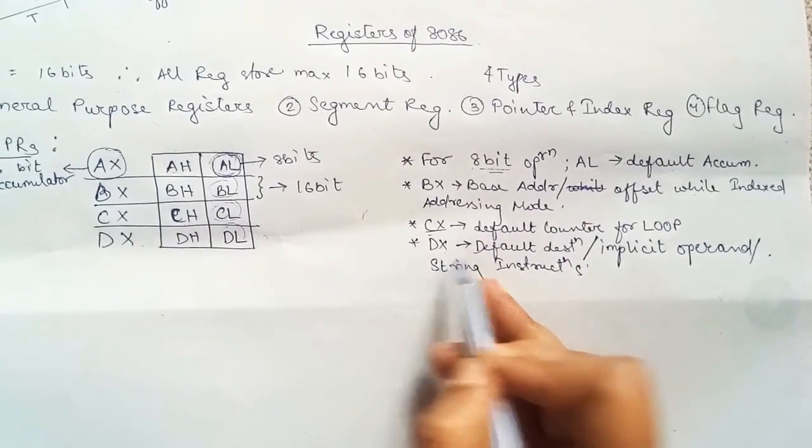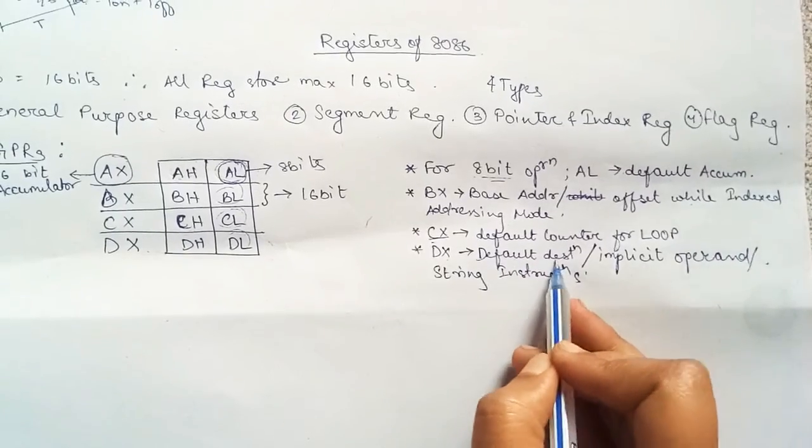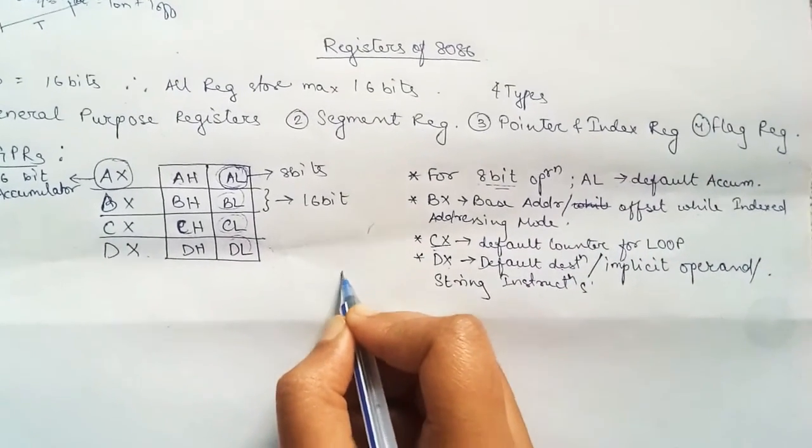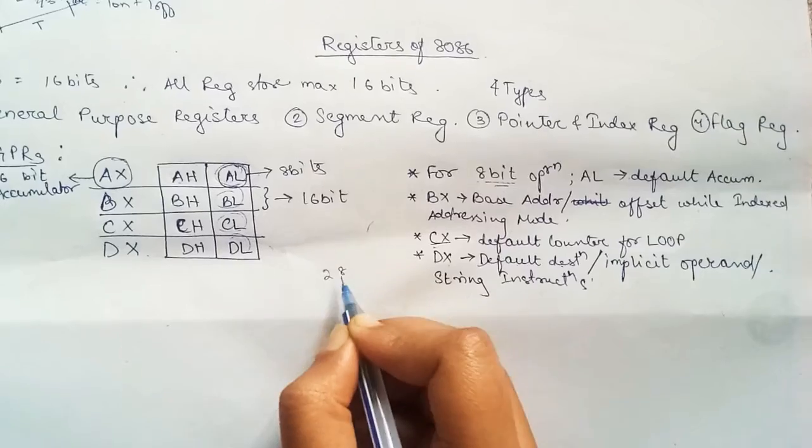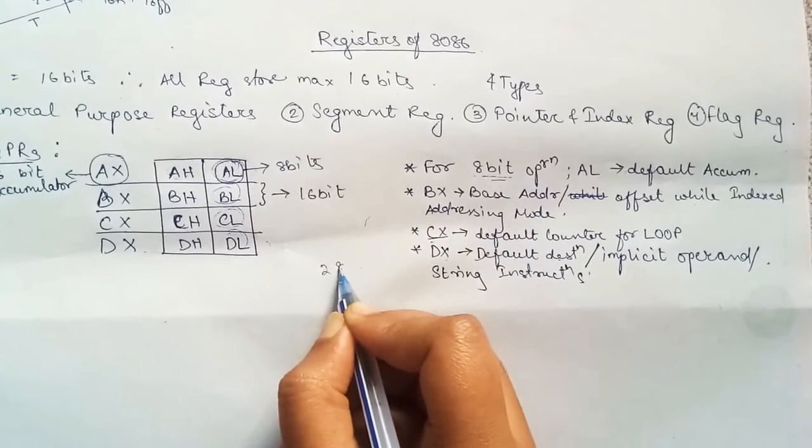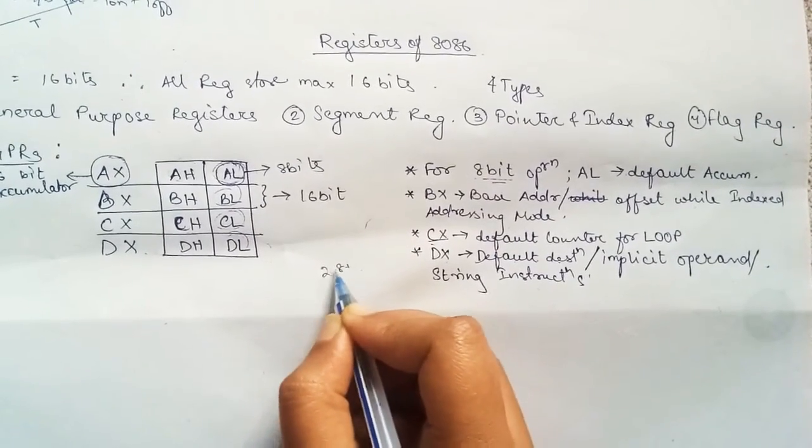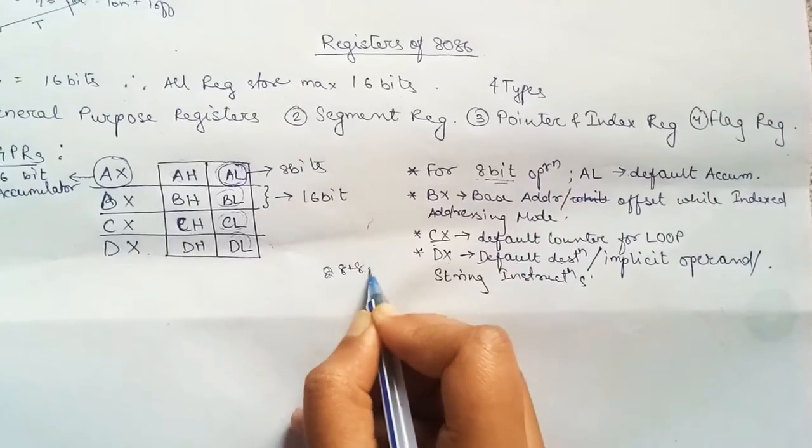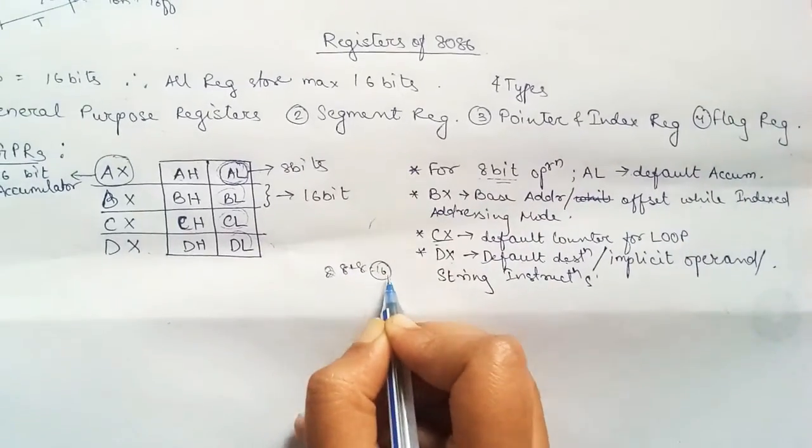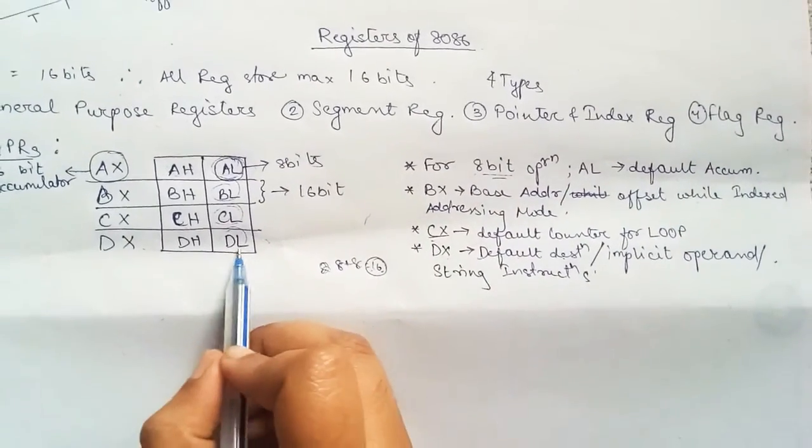For example, if we multiply two 8-bit numbers, the resultant will be 8 plus 8, it will be 16-bit. The resultant will be 16-bit and therefore it will be stored in DX.